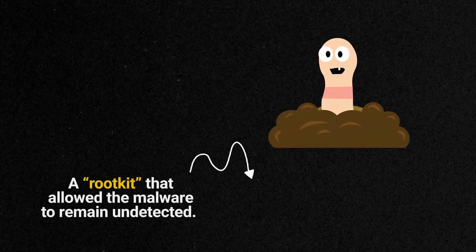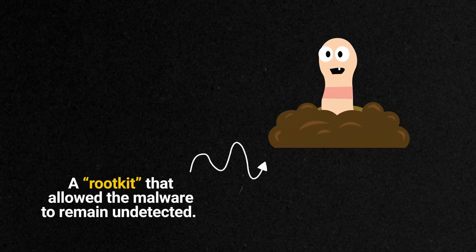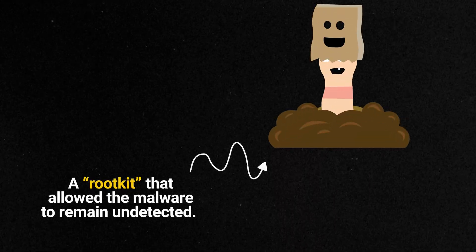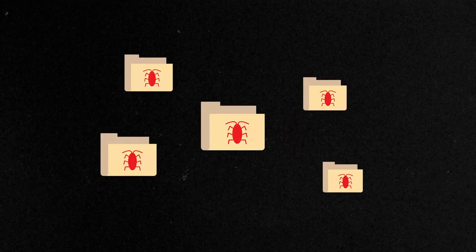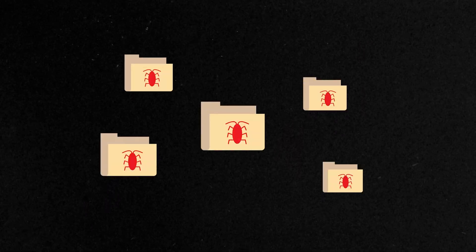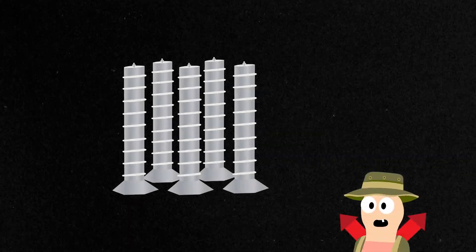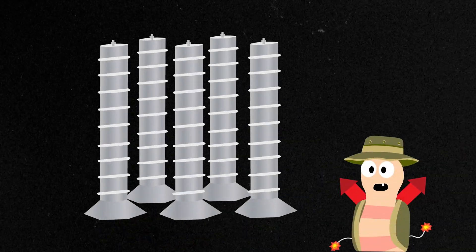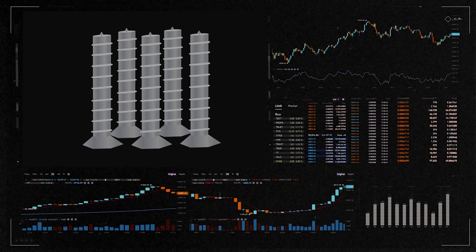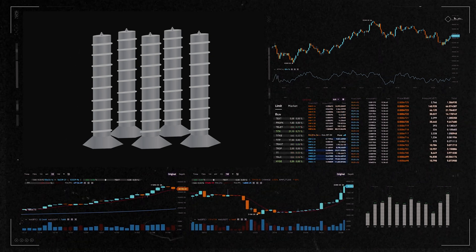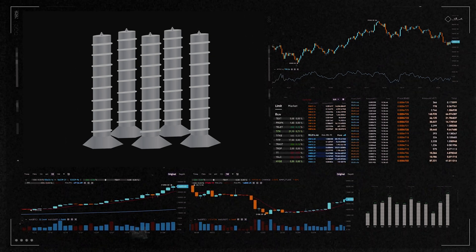The third part was what allowed Stuxnet to remain undetected. It was a collection of software called a rootkit that masked Stuxnet's existence. The rootkit hid all of the malicious files and processes that were being used by Stuxnet. That meant the Stuxnet payload would tear up the centrifuges, while the systems data would suggest that everything was just fine.